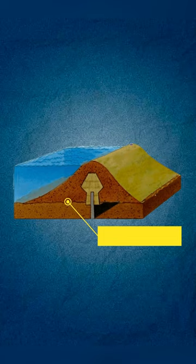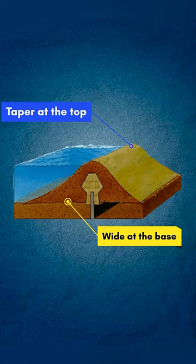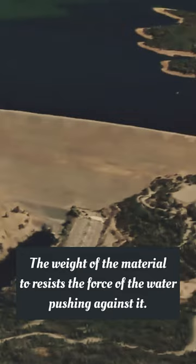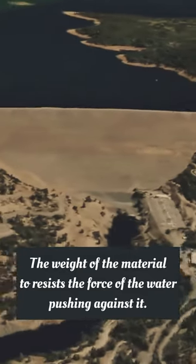Embankment dams are wide at the base and taper towards the top. This design uses the weight of the material to resist the force of the water pushing against it.